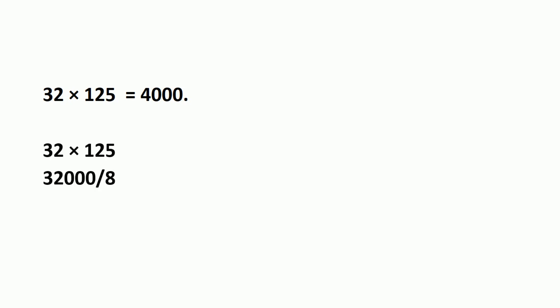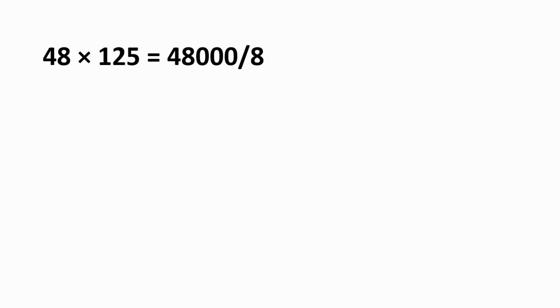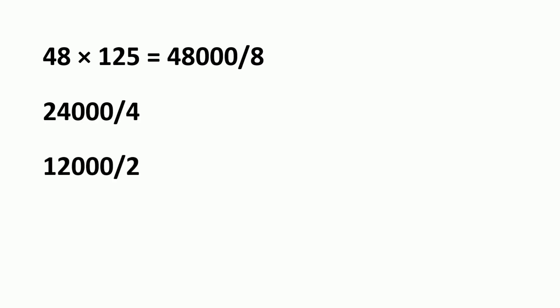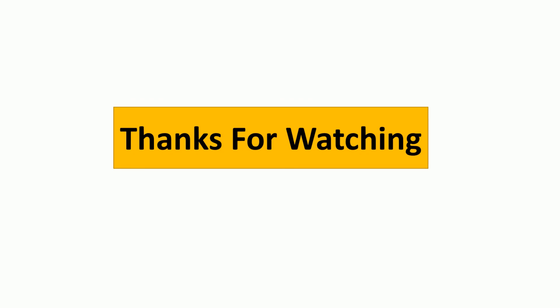For example, 32 multiplied by 125: write three zeros with 32 to get 32000. Divide by 2: first time gives 16000, second time 8000, third time 4000. So the answer is 4000. Another example: 42 multiplied by 125. Write three zeros to get 42000 and divide by 8 — the answer is 6000. For more math tricks, fast calculation, and quantitative reasoning tips, subscribe to our channel, like this video, share it, and comment below. Thanks for watching!